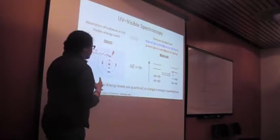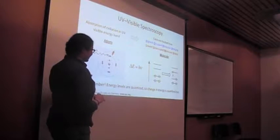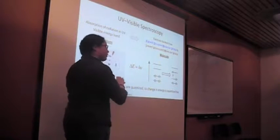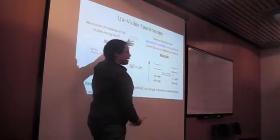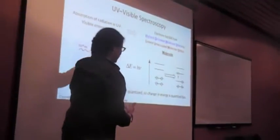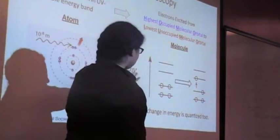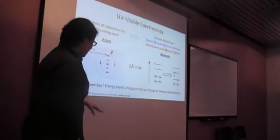We have absorption of radiation in the UV-visible energy range. And what this is going to do is excite electrons from the ground state in the atoms to the excited states, to higher energy. This change in energy, this gain in energy, is going to be quantized related to the Planck-Einstein relation.